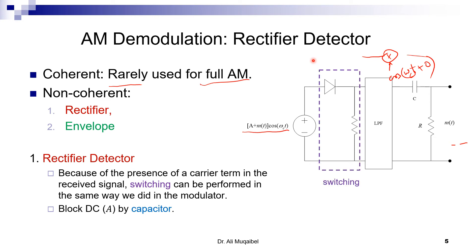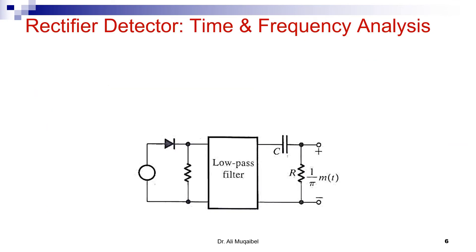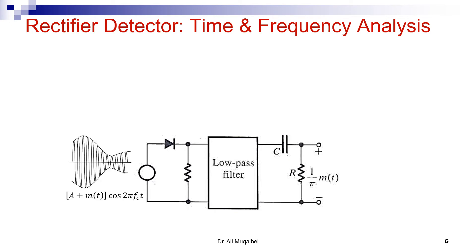This is a switching circuit, and here is the blocking capacitance circuit. It would be a good idea if you can redraw this diagram to show that the components are very simple: rectifier, then a low-pass filter, blocking circuit, and load. Now let's see things in time and frequency domain. This is a very useful slide. We start with the signal in time. This is the modulated signal plus carrier. In frequency, we are familiar with the spectrum. It has two deltas, showing that there is a carrier component.